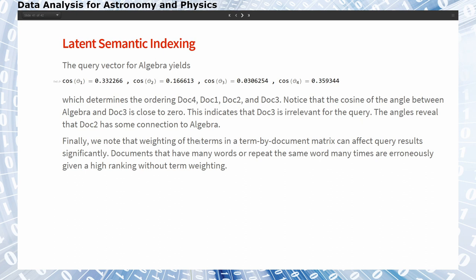Finally, we also note that weighting of the terms in the term-by-document matrix, for example putting in a 2 or a 3 instead of a 1 in the query vector, can affect the result significantly. Or we can weight the terms in the term-by-document matrix. This might be relevant because a document that repeats the same word many times will give us a very high ranking in a search, an erroneously high ranking when we do not weight the occurrence.